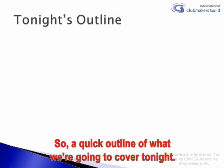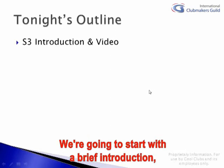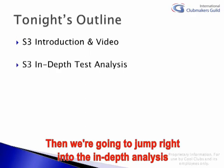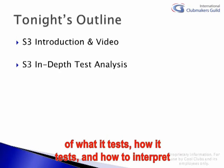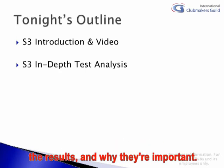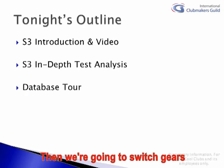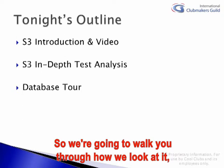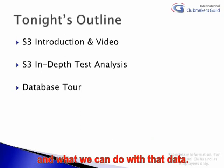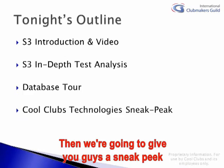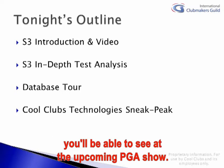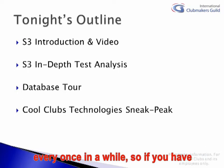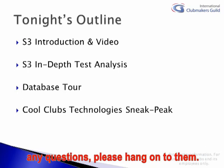So a quick outline of what we're going to cover tonight. We're going to start with a brief introduction and go over the history of the machine and how it came to be. Then we'll jump into the in-depth analysis of what it tests, how it tests, and how to interpret the results and why they're important. Then we're going to switch gears and look at the database, because this machine spits out a tremendous amount of data, and we'll walk you through how we look at it and what we can do with that data. Then we'll give you a sneak peek as to what else we're working on and some things you'll be able to see at the upcoming PGA Show. We'll open up for questions every once in a while, so if you have any questions, please hang on to them.